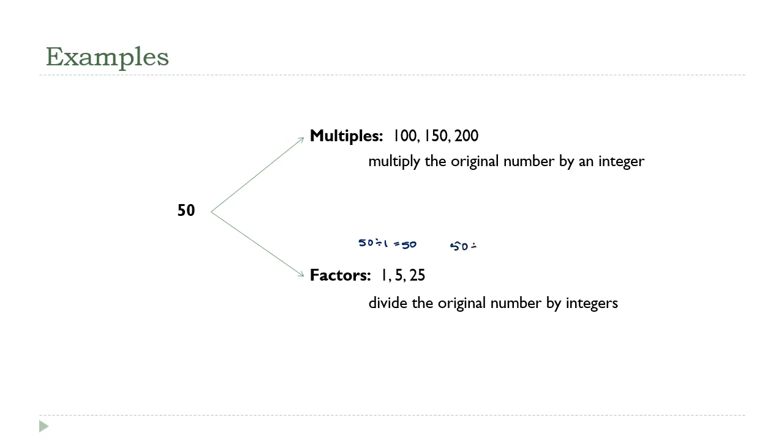50 divided by 5 is 10, so 5 is a factor. And 50 divided by 25 is 2, so 25 is also a factor.